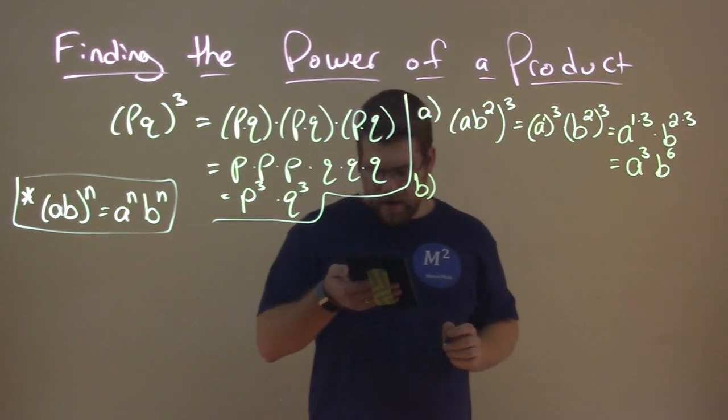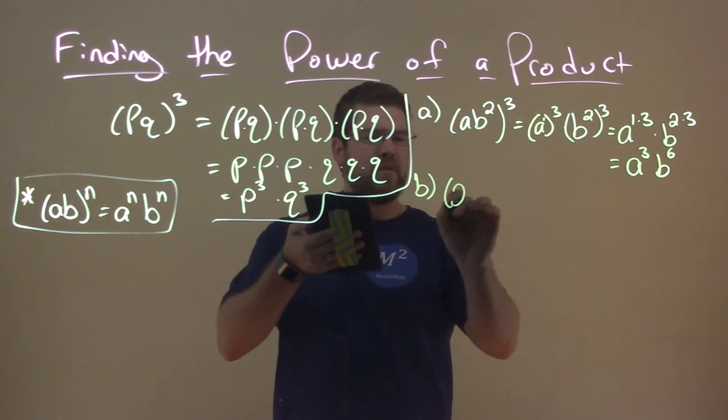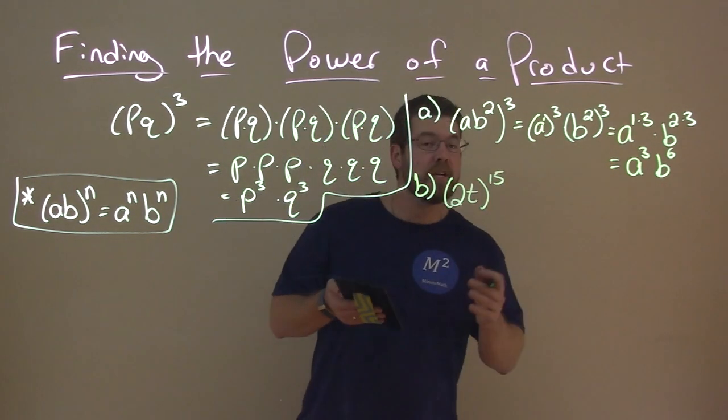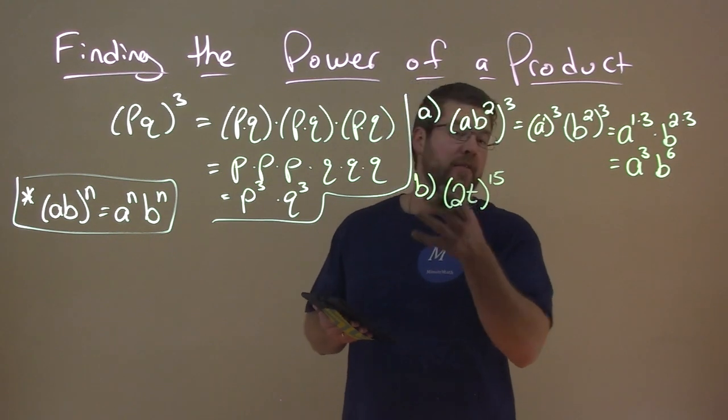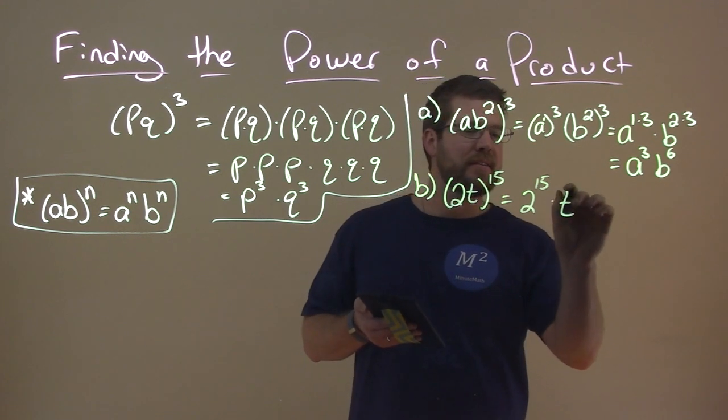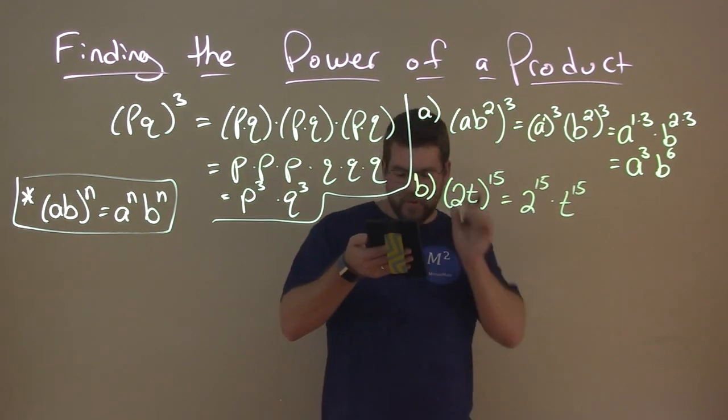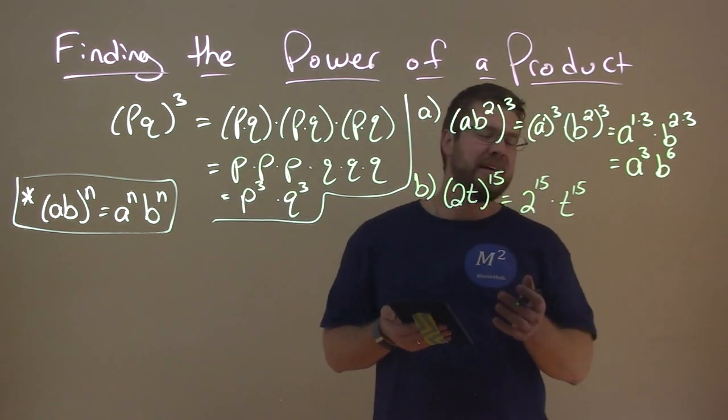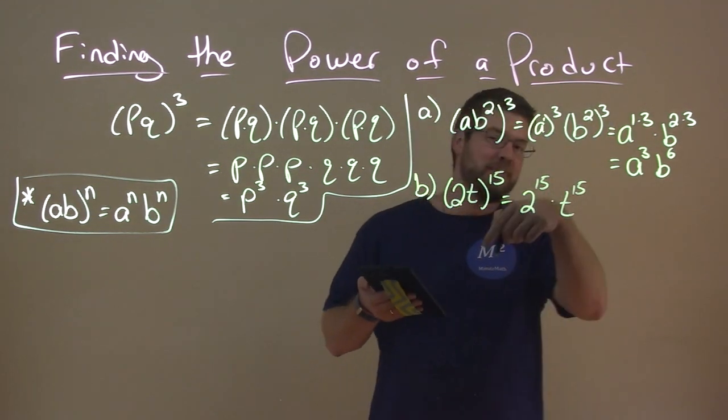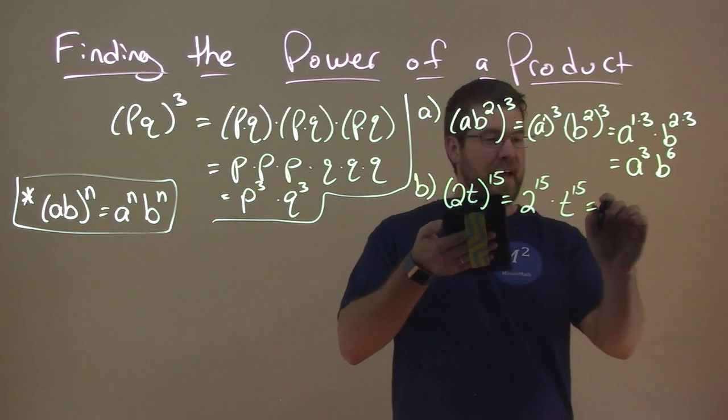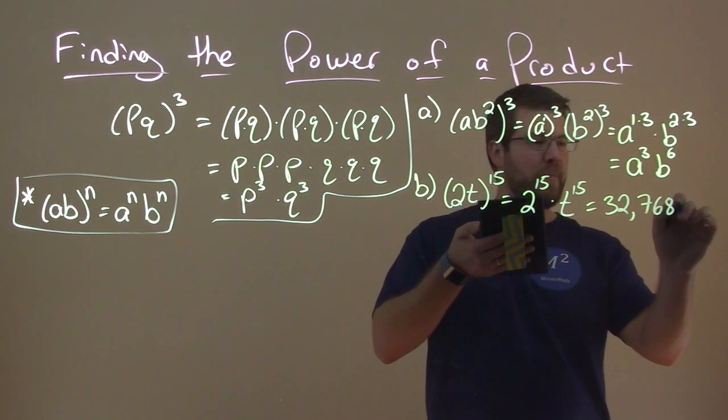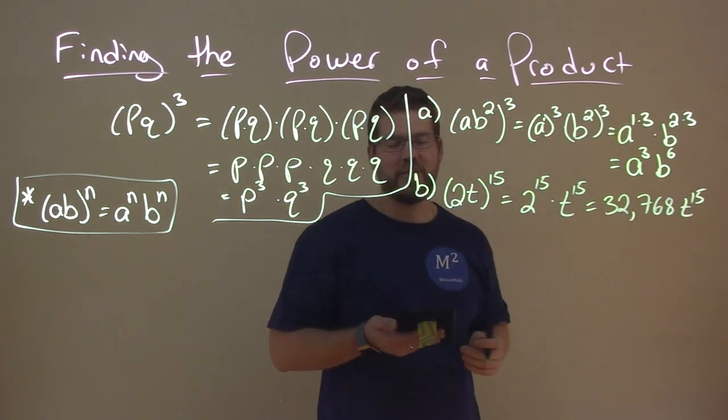Let's go with b. b tells us that we have 2t to the fifteenth power. Now for each one of these, remember our rule, 2 itself is a base and t is a base. So that's 2 to the fifteenth power times t to the fifteenth power. And we can try to simplify this a little more. t to the fifteenth can't be simplified. 2 to the fifteenth, I don't know off the top of my head. If you do, let me know down below, but I sure don't. And it's 32,768. And then we have t to the fifteenth power. And there's our answer, not too bad.